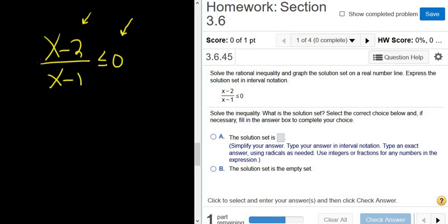The next step is to set each piece equal to 0. This is called the test point method. So you set each piece equal to 0 and you solve. So you get x equals 2 and x equals 1.